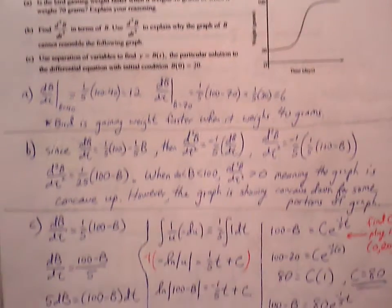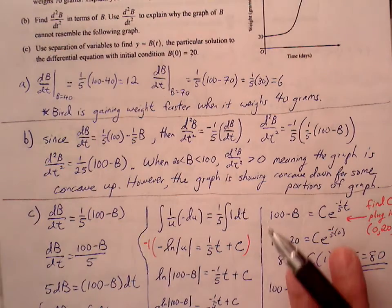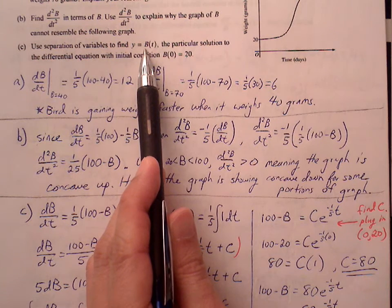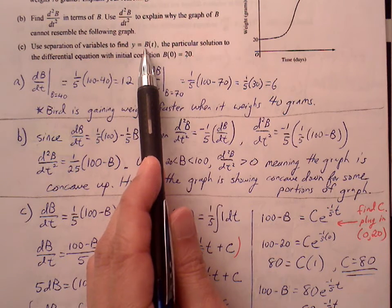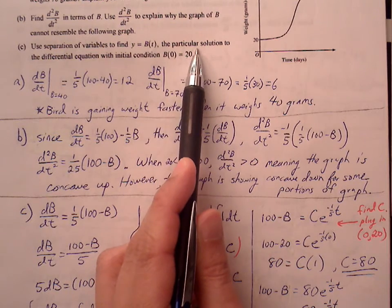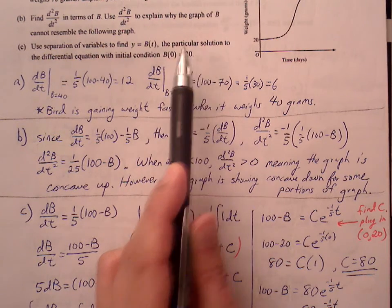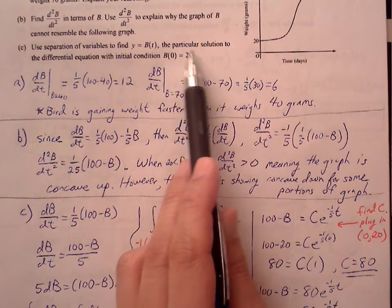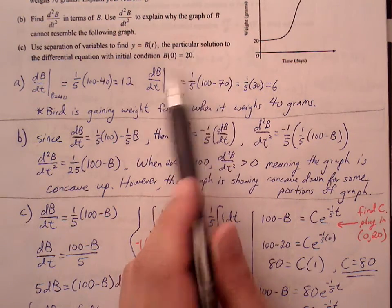Moving on to part (c), we're going to be separating the variables and solving to get B from the derivative form to original function form in terms of B(t). Once we get to our general solution, we're going to move to a particular solution by solving for C and using the ordered pair (0, 20) to help us do that.